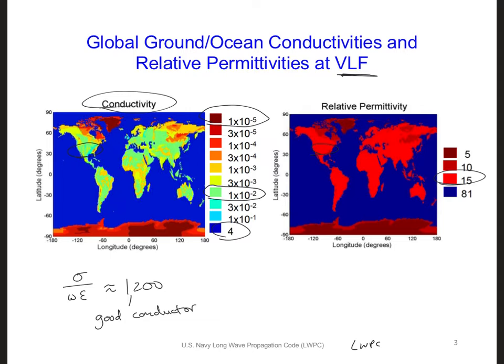However, while the ground is a good conductor, we shouldn't necessarily assume it can be approximated as a PEC. For a material to be a perfect conductor, we have to be able to assume that the electromagnetic fields inside the material — the ground in this case — are equal to zero, or close enough to zero that we don't need to care about the fields in the material and their impact on the fields outside of the material. But when a material has a finite conductivity, like the values listed here or 1×10⁻², the electromagnetic fields will diffuse some distance into the material that corresponds to the skin depth of that material.